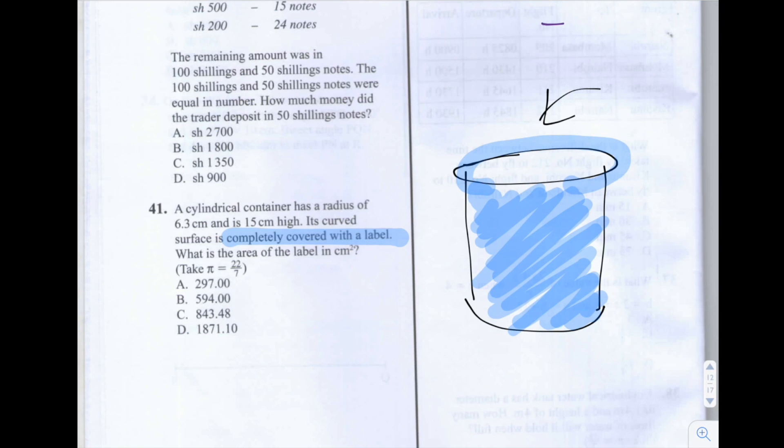So in order to work out what the total area of the label is, we first need to work out the perimeter here of the cylindrical container. And then we need to multiply the perimeter of the cylindrical container by the height. And I'll draw another image for this to make a bit more sense to you.